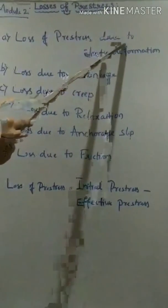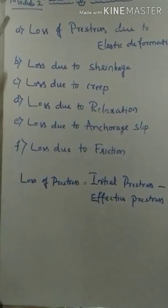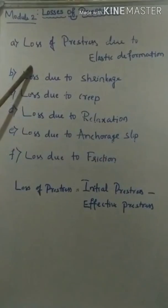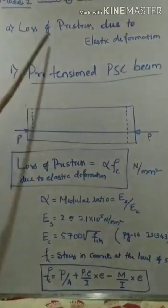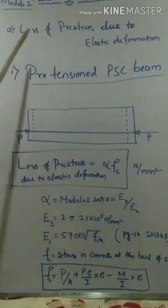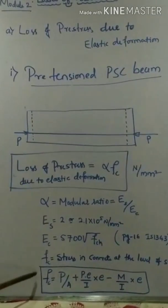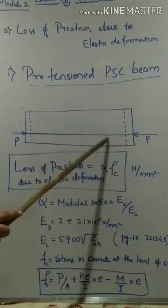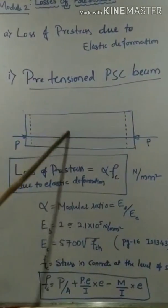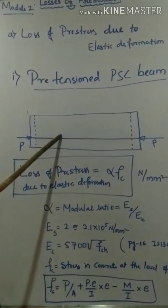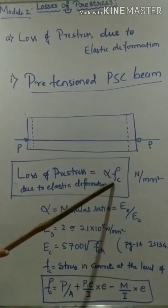We will now go through each loss type with its introduction and problems. Starting with loss of pre-stress due to elastic deformation in a pre-tensioned PSC beam: when concrete undergoes elastic deformation, there is a loss of stress in the PSC beam.